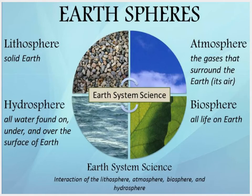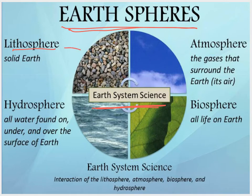Earth is a system science. Because it's a system, there are various pieces and parts that interact. We talk about these as the spheres of the earth. The first is the lithosphere — the solid part, like your rocks and dirt. Then we have the hydrosphere — the water found on, under, and over the surface of the earth — so oceans, rivers, lakes, streams, and underground springs.